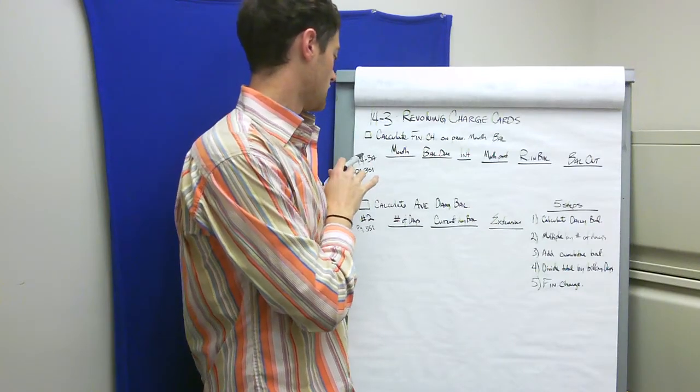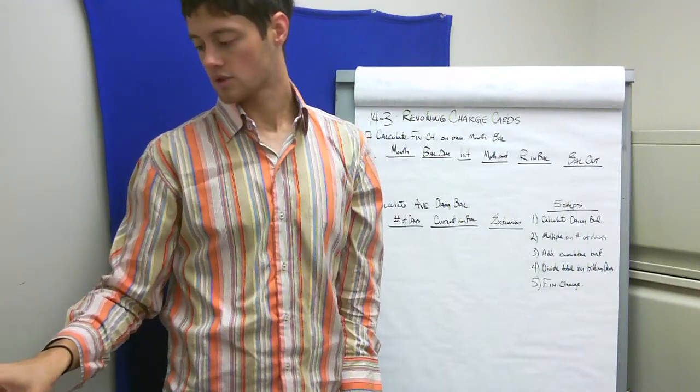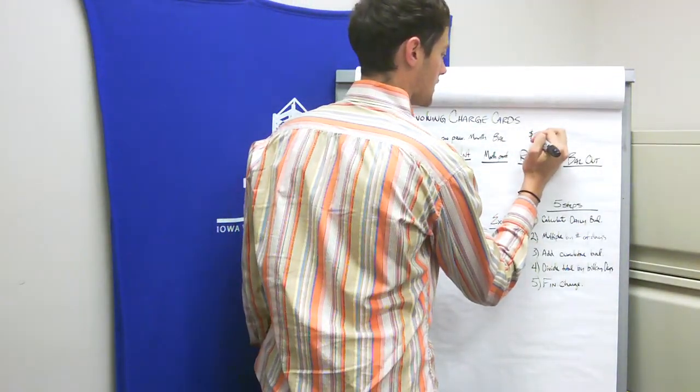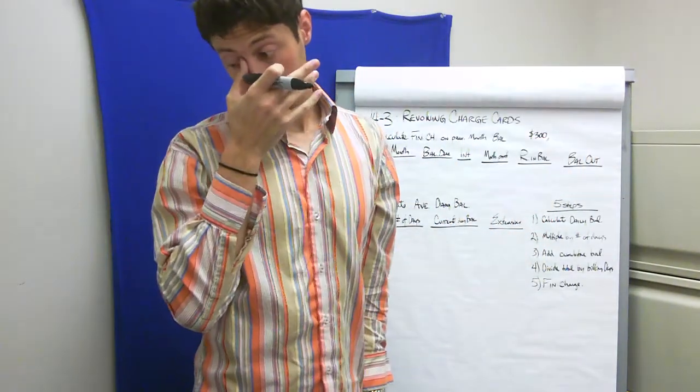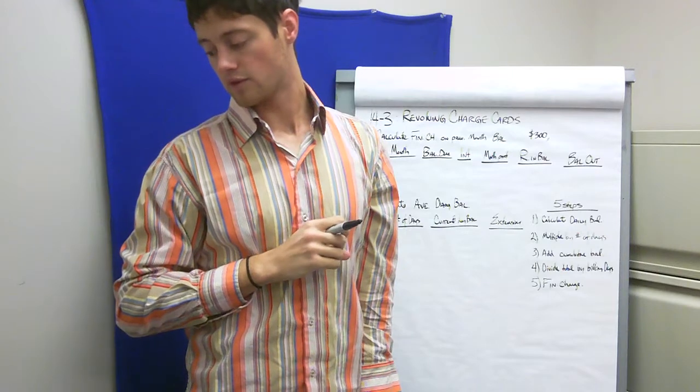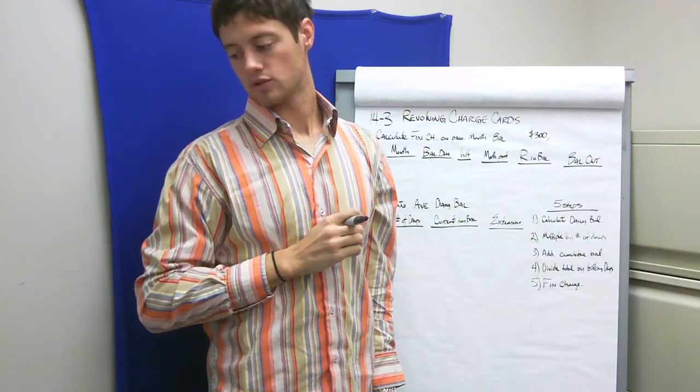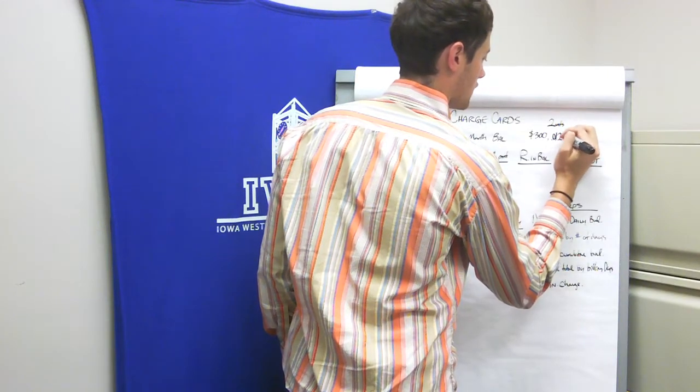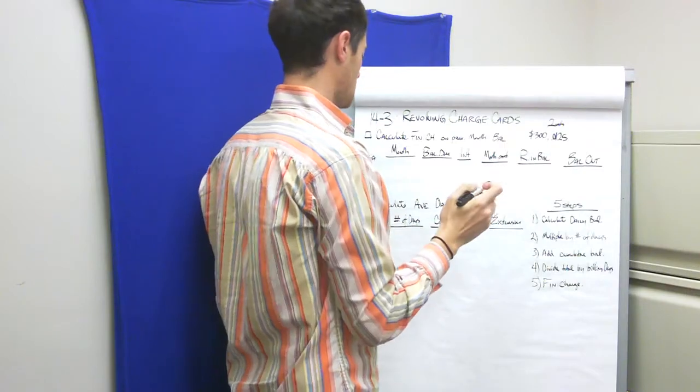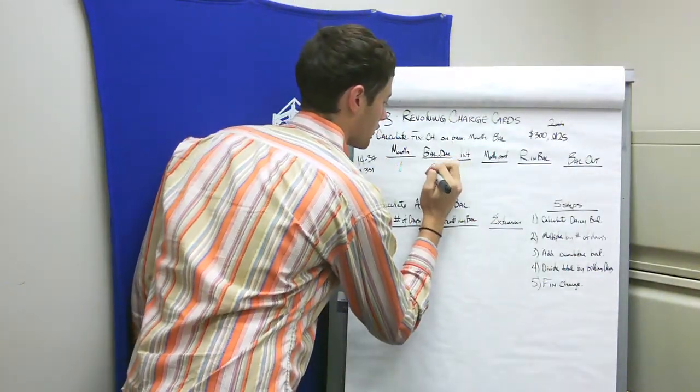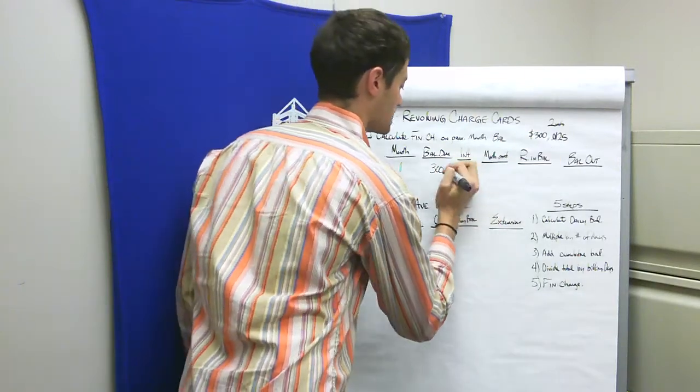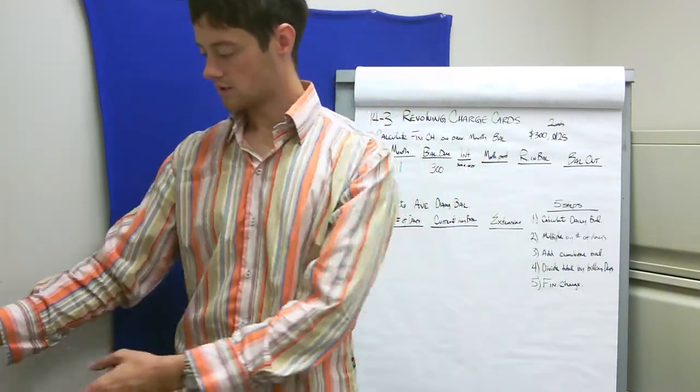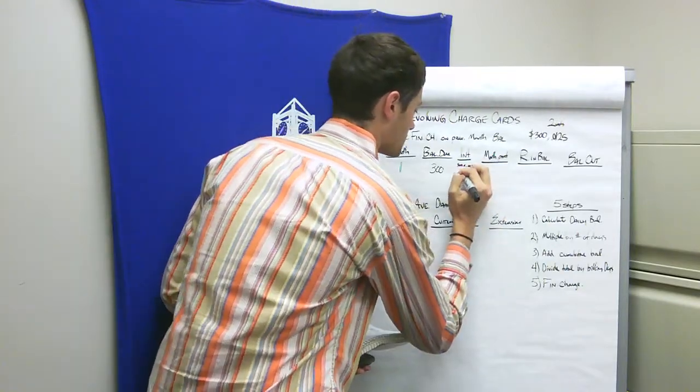It says if we purchased a $300 desk with monthly payments of $20 and a charge of one and a quarter percent interest, after two months what's outstanding? So two months, 0.0125 interest. Month one, amount due is $300 because that's what we bought it for.